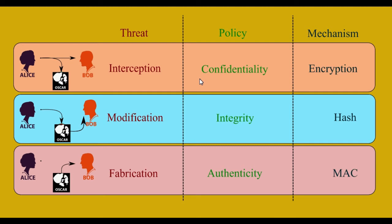The third policy against fabrication is authenticity. Authenticity means that every time Bob receives a message, Bob will be able to authenticate whether it came from Alice — the legitimate user — or not. In short, we call this the CIA policy: Confidentiality, Integrity, and Authenticity.